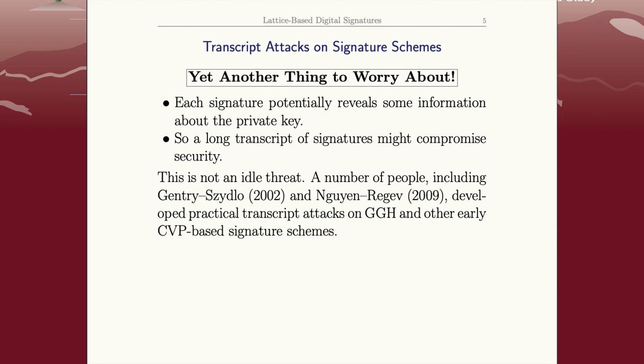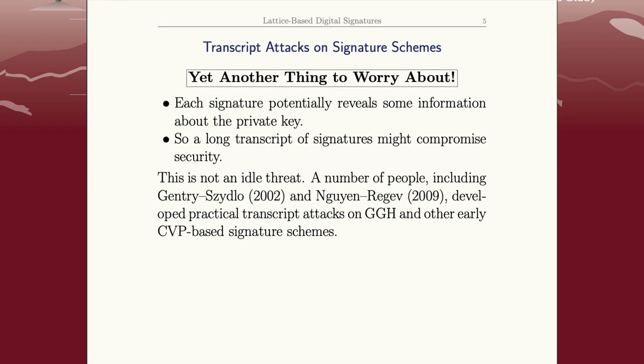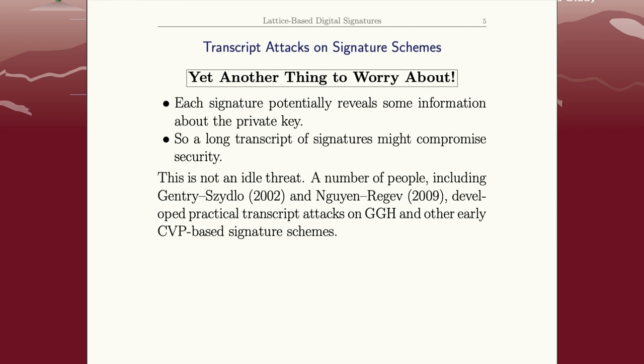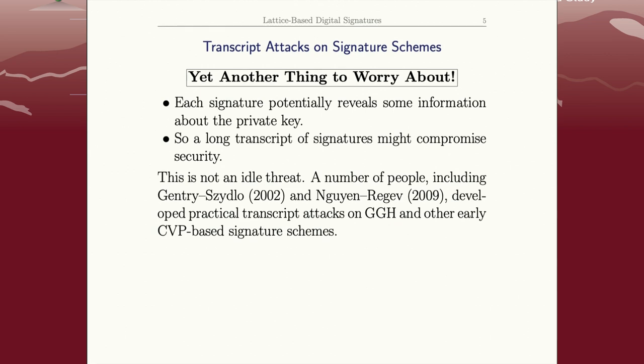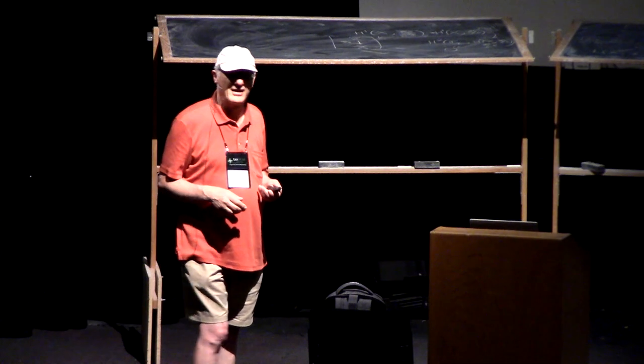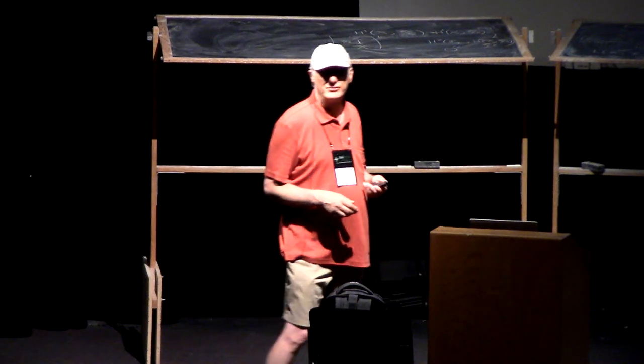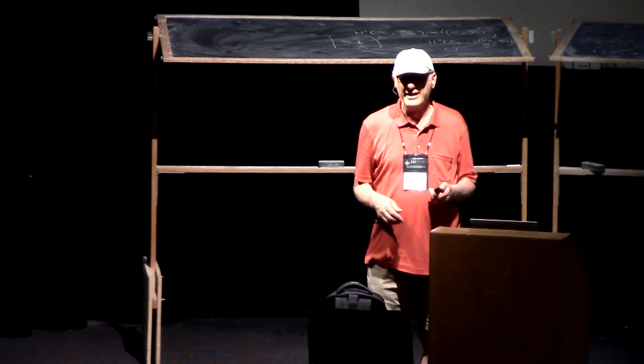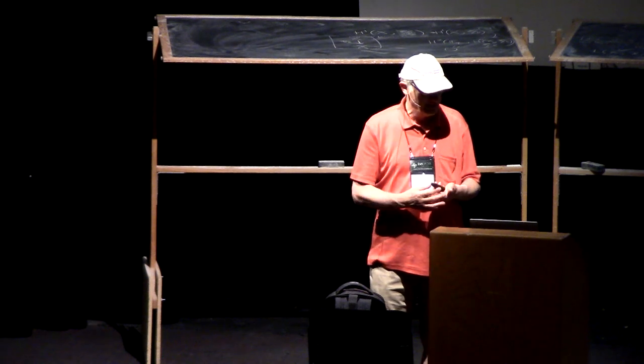In essence, optimization techniques to take advantage of the tiny bit of information in each signature and somehow amplify it. I think we had predicted a transcript of a hundred million signatures might be enough to break the thing, and I think they broke it with about 5,000 signatures. So this is a big issue. At that point it became clear you really don't want to be leaking any information.